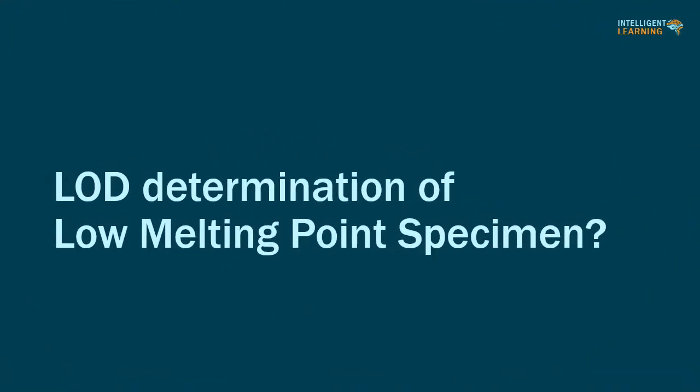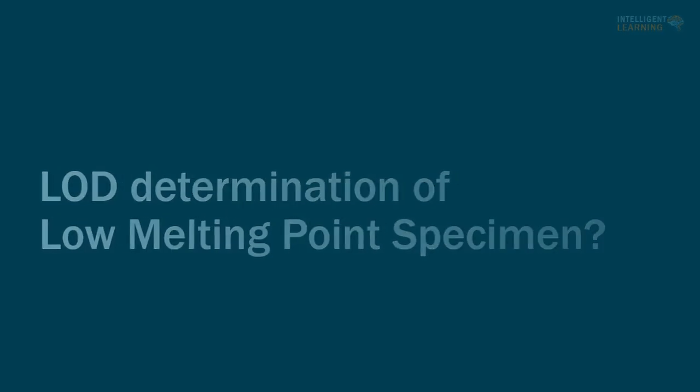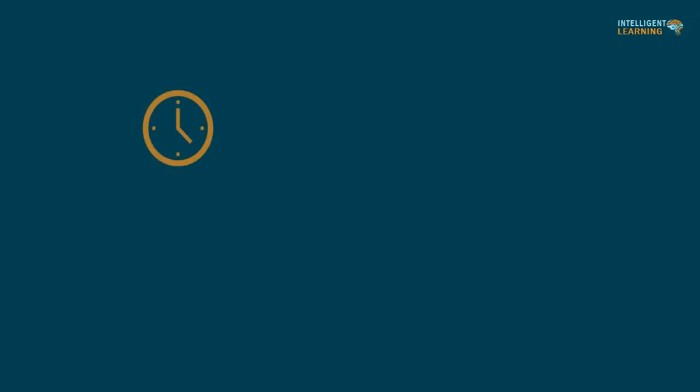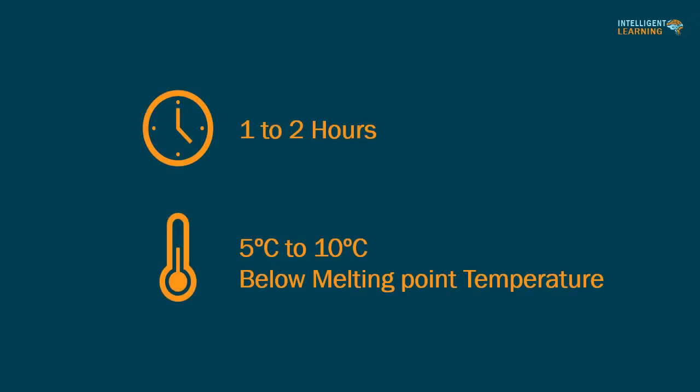How to do LOD determination for low melting point specimen: if the substance melts at a lower temperature than that specified for the determination of loss on drying, maintain the bottle with its contents for 1 to 2 hours at a temperature 5 to 10 degrees Celsius below the melting temperature, then dry at the specified temperature.